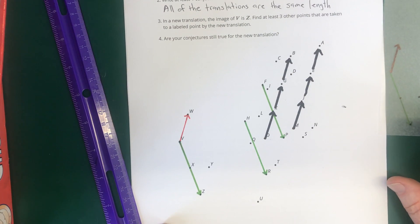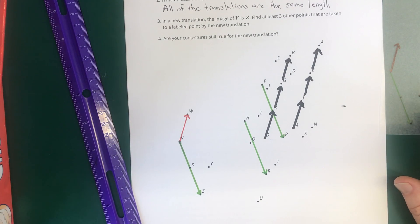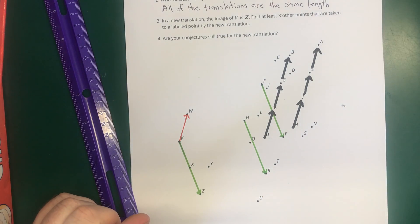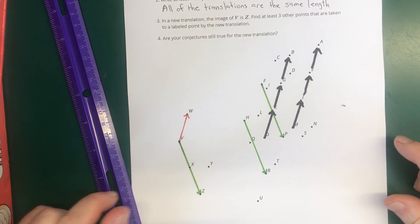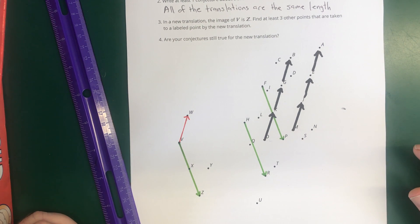So those would be two of the answers to the second one. And you have to find another answer. And then it's going to ask you if the conjecture or conjectures that you made in question two are still true after you've done the second one. So I'm going to leave that to you to figure out.